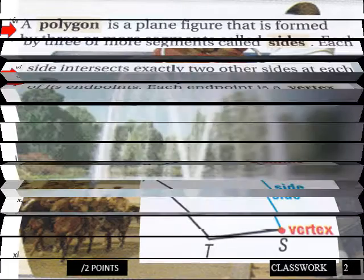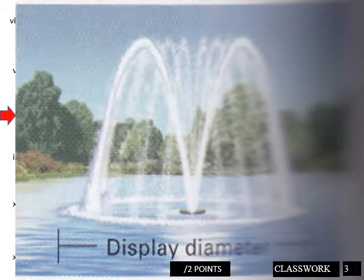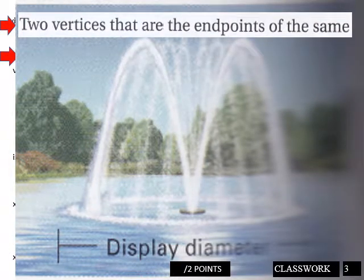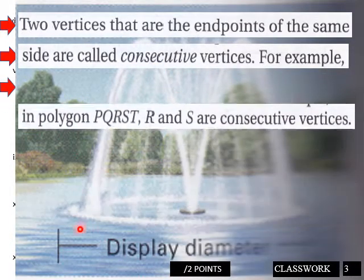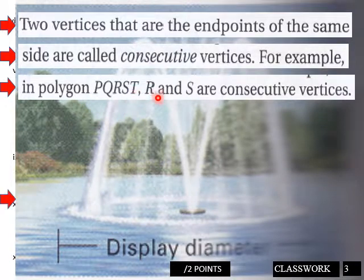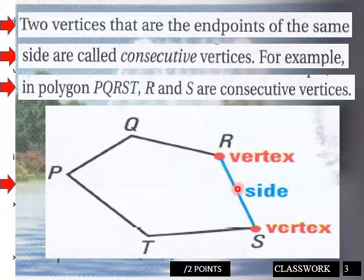Each endpoint is a polygon. Page three of your classwork. Two vertices that are endpoints of the same side are called consecutive vertices. For example, polygon PQRST, R and S are consecutive vertices because they're adjacent to each other. And Q and R will be consecutive, and T and S will be consecutive.